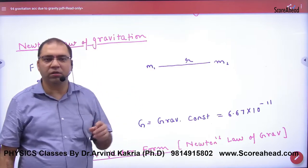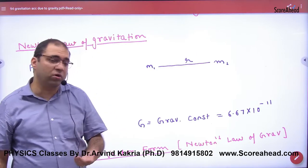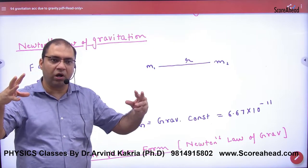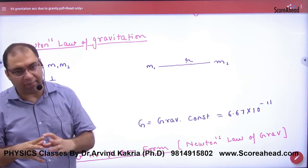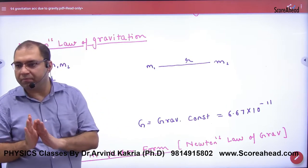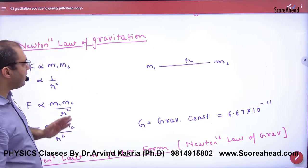Two masses are a distance r apart. If you take a sphere or a disk, the attraction follows a different law. That's why I've mentioned these masses are point masses, separated by distance r.